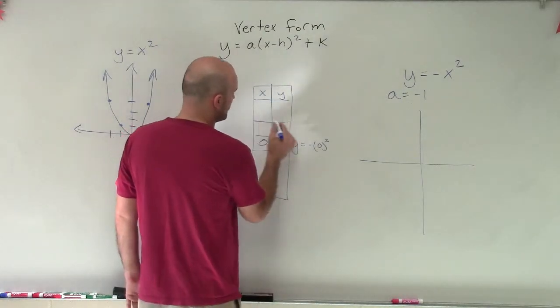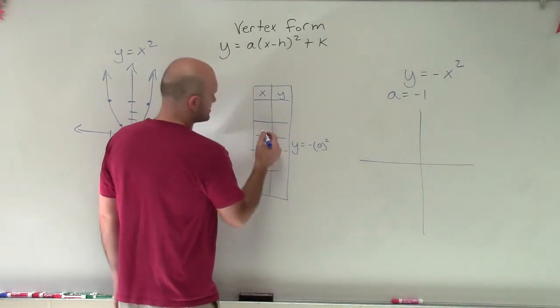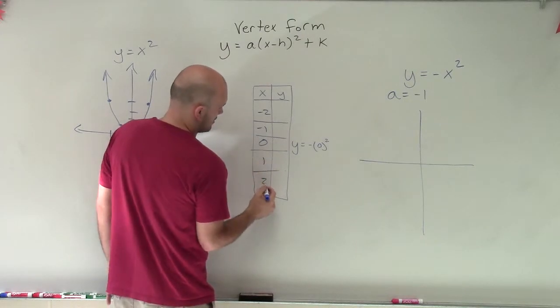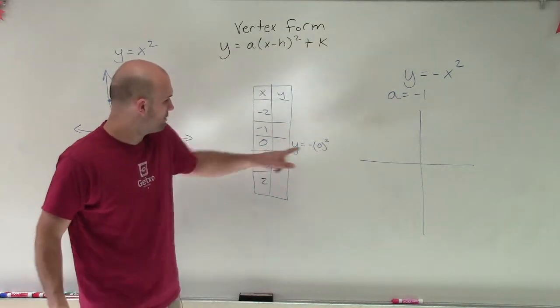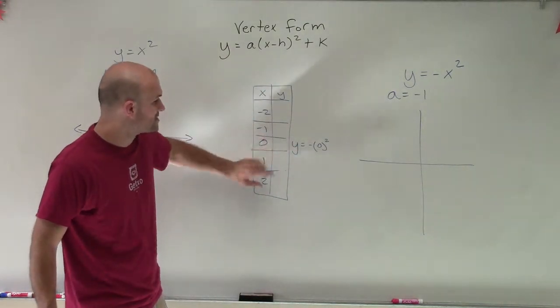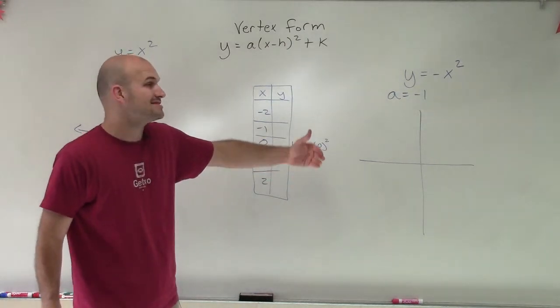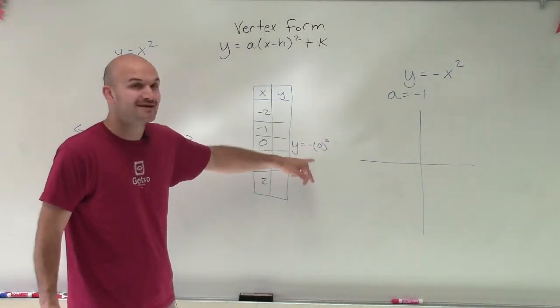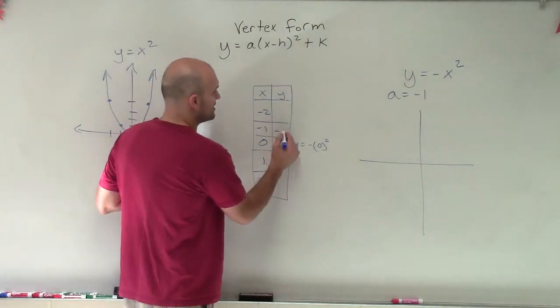So if I picked two points to the left and then two points to the right, now we notice no matter whatever my number is, it doesn't matter if it's positive or negative. When I square it, it's always going to be positive. But then, I'm always multiplying it by a negative number, so now it's going to be negative.